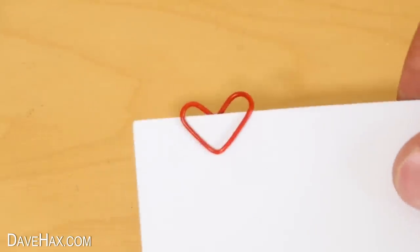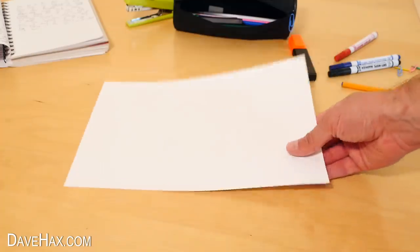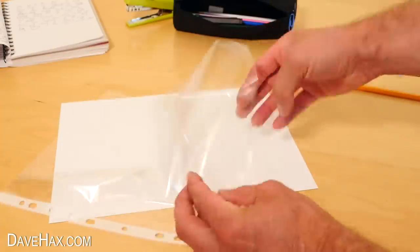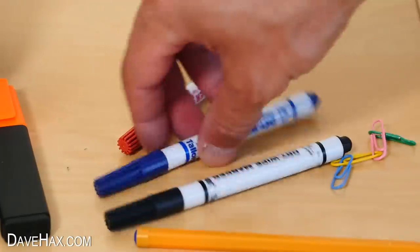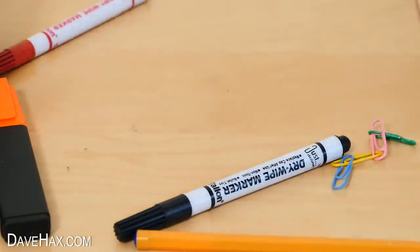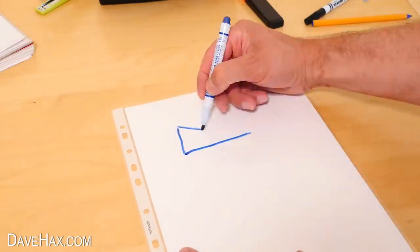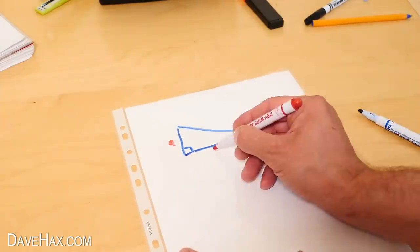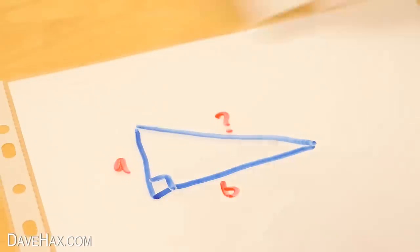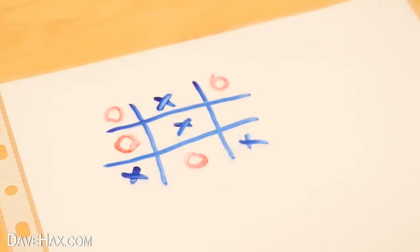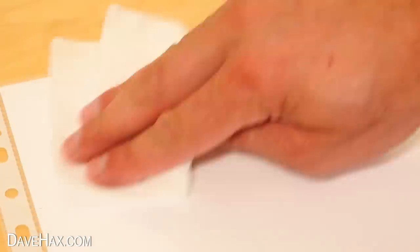Instead of wasting scraps of paper, you can make your own whiteboard by putting a piece of paper or card inside of a plastic wallet. Just use dry wipe marker pens, and you're good to go. You can doodle or make whatever notes you want to, then just wipe them out with paper. Quick and easy to remove the evidence.